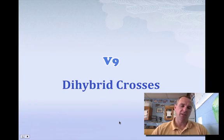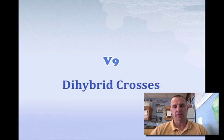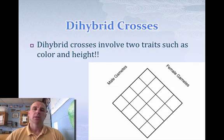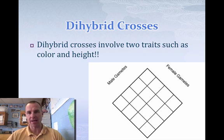Hey guys, we're back with video 9: di-hybrid crosses. I hope that you remember from the mono-hybrid crosses we talked about yesterday how to do these. When we talk about di-hybrid crosses, di means two, so a di-hybrid means a two-trait cross — you're going to be dealing with things like color and height, or shape and size.